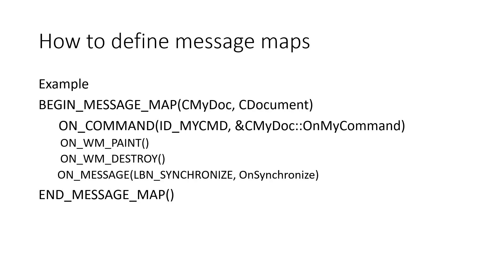Here is a simple example of a message map. You start with BEGIN_MESSAGE_MAP and end with END_MESSAGE_MAP. In between, you have ON_COMMAND, ON_WM_PAINT, and ON_WM_DESTROY, which are the Windows messages that are handled, and so on.